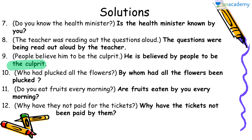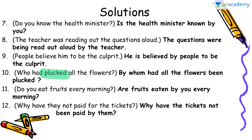Next: Who had plugged all the flowers? It starts with 'who,' asking for the doer, followed by 'had' plus 'plugged,' which is the third form of 'pluck.' With 'has,' 'have,' and 'had,' we always use the third form of the verb — don't confuse the second and third forms. 'Had' plus the third form tells us this sentence is in past perfect tense. It will be changed as: By whom had all the flowers been plugged?